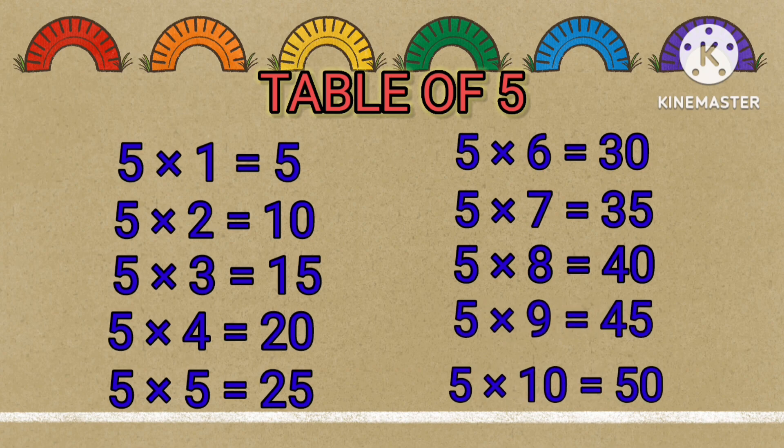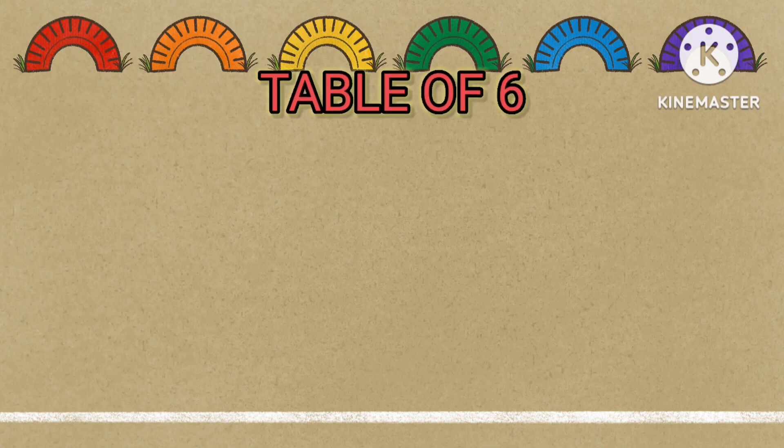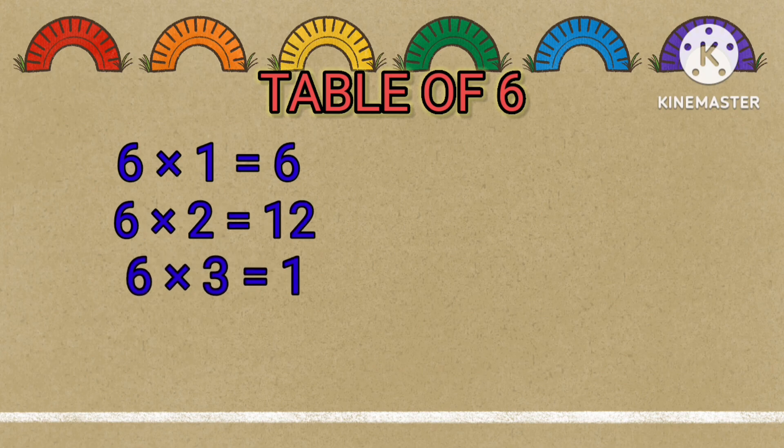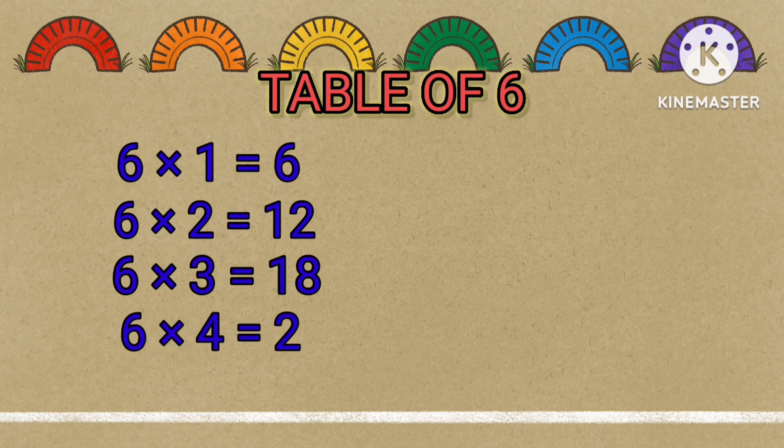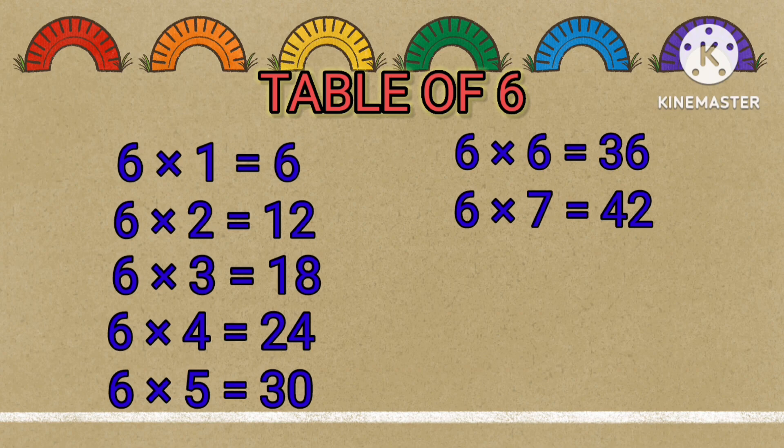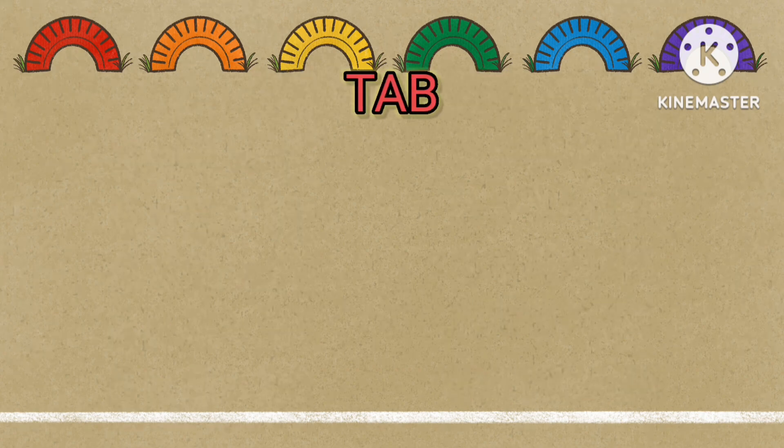Table of 6: 6 times 1 equals 6, 6 times 2 equals 12, 6 times 3 equals 18, 6 times 4 equals 24, 6 times 5 equals 30, 6 times 6 equals 36, 6 times 7 equals 42, 6 times 8 equals 48, 6 times 9 equals 54, 6 times 10 equals 60.